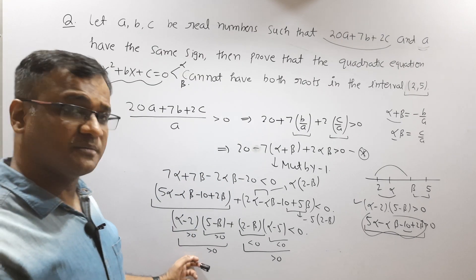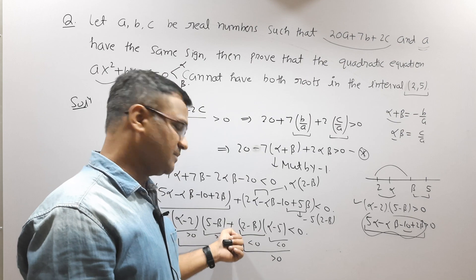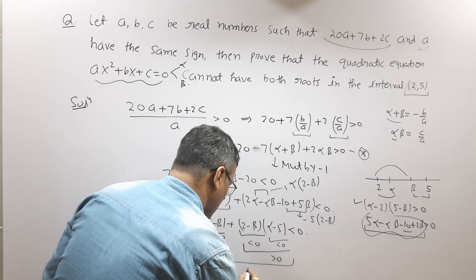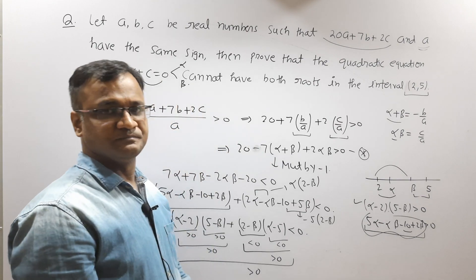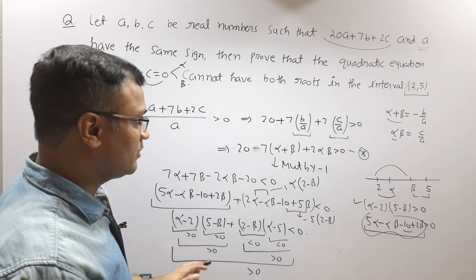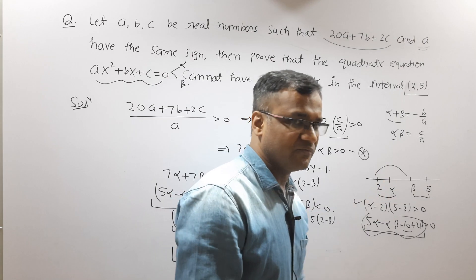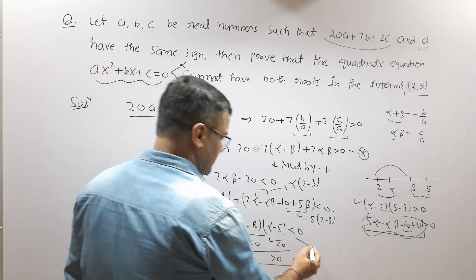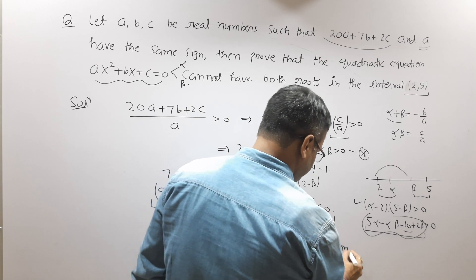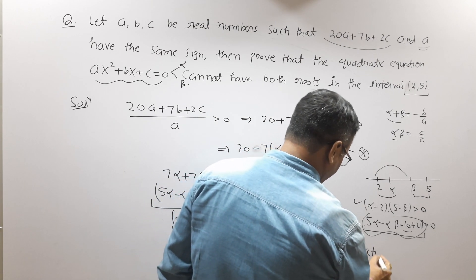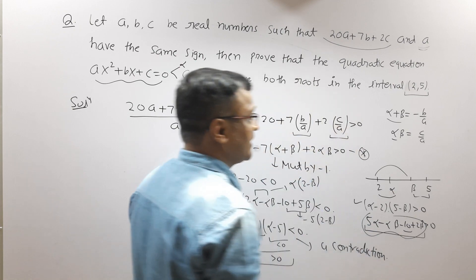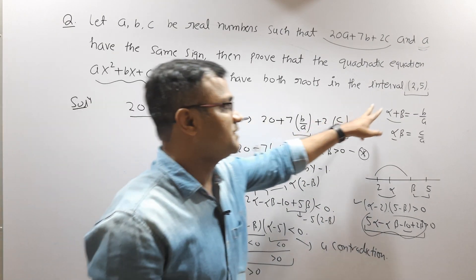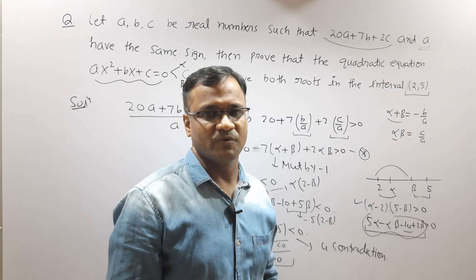Now, since both roots lie in (2, 5): α − 2 > 0 and 5 − β > 0, so the first term is positive. Also, 2 − β < 0 and α − 5 < 0, so their product is also positive. The sum of two positive numbers is positive — but our expression must be less than 0. This is a contradiction, meaning there do not exist both roots lying within the open interval (2, 5).